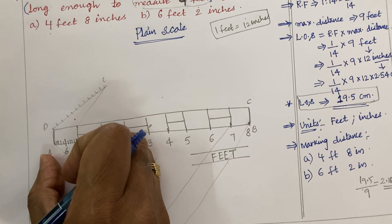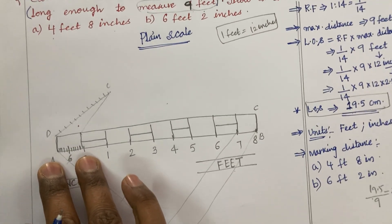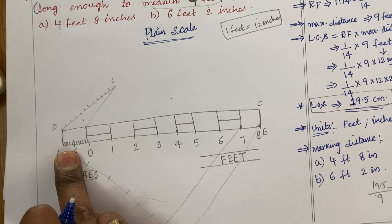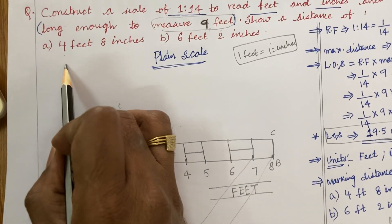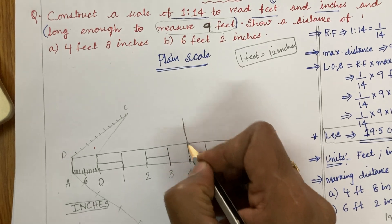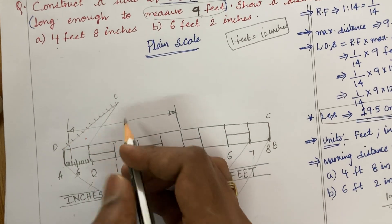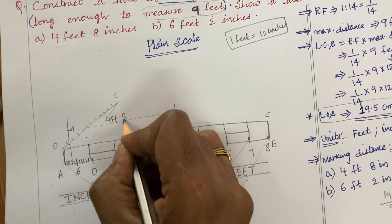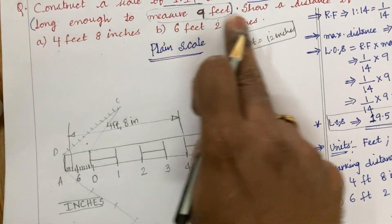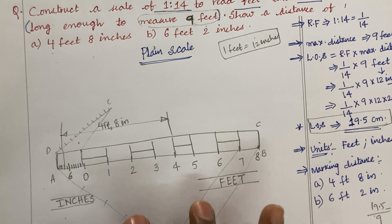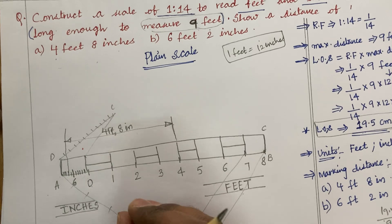I am considering only the first box as per the construction of a plain scale — the main unit is feet and the secondary unit is inches. That is why I divided this box into 12 equal divisions. When feet and inches are the units, divide this box into 12, not 10. Now for the marking distance: the first distance is 4 feet 8 inches. Take 4 feet directly, draw a perpendicular line there, then count 6, 7, 8 on the inch scale and draw another line. Draw a dimension line with filled arrowheads and write '4 feet 8 inches' exactly at the center of the dimension line.